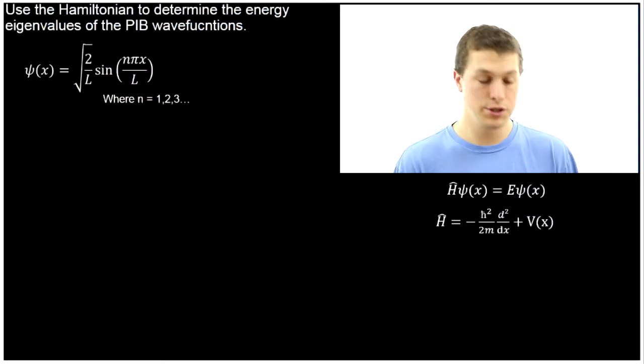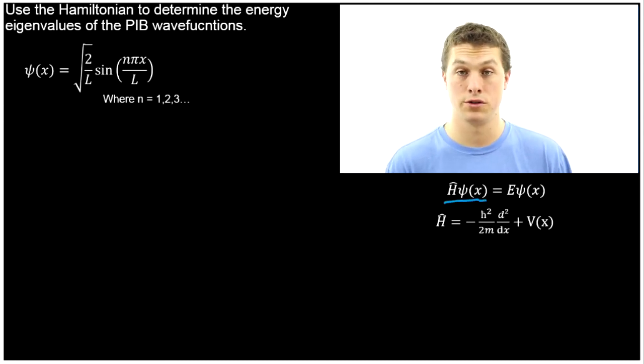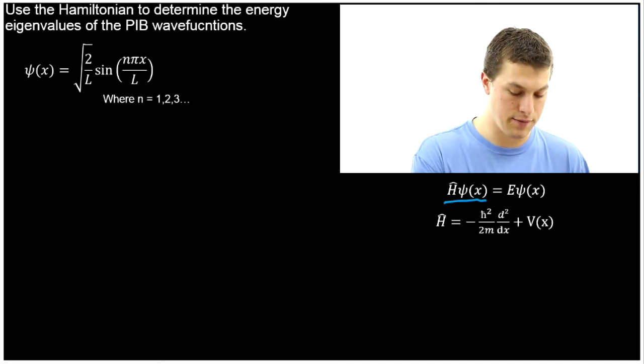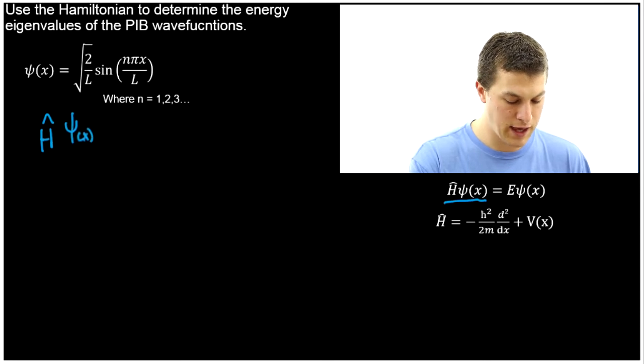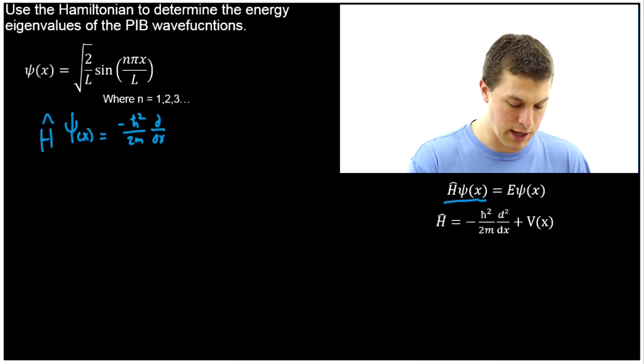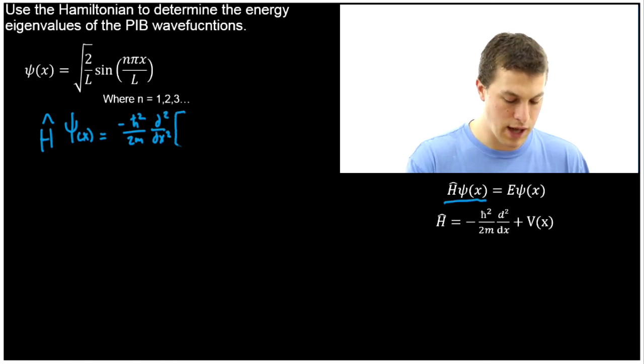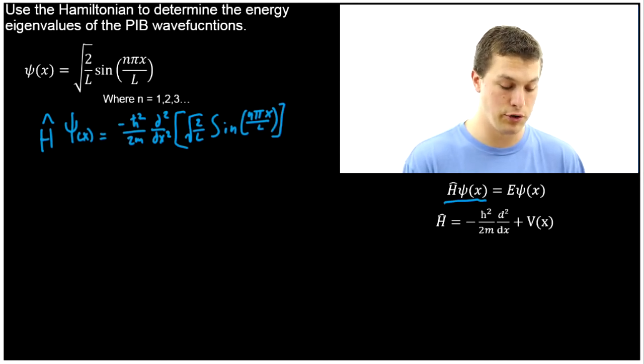Here's our wavefunction, and we're going to apply the Hamiltonian. I'm going to write down the first half of the Schrodinger equation, and later I'll show you how that connects to the second half. We write the Hamiltonian times our wavefunction, and we get negative h-bar squared over 2m, the second derivative times our wavefunction, which is square root of 2 over L, sin nπx over L. We don't have to worry about the potential because it's zero, so the Hamiltonian becomes just that first term.